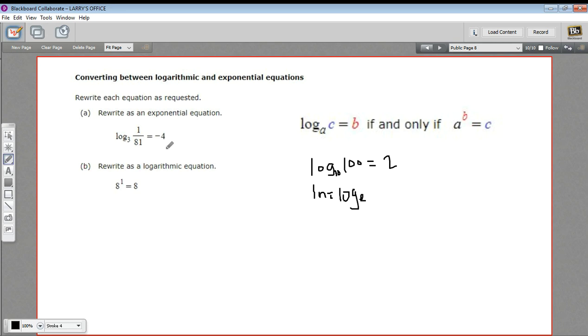We don't need to really solve anything. We just need to rewrite it in exponential notation. The way to remember that is that this is the base here. So that's the base. And this is the power. So this equation basically says 3 to the negative 4 power gives you 1 over 81. So we would rewrite this as 3 to the negative 4 equals 1 over 81. And I hope you can see that that's the case.